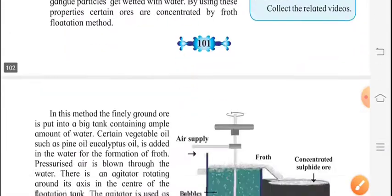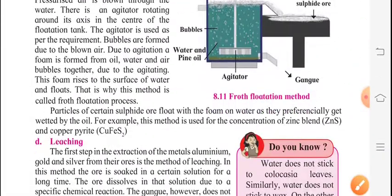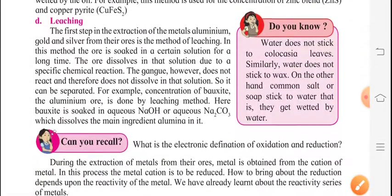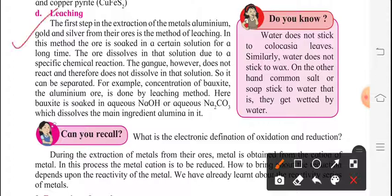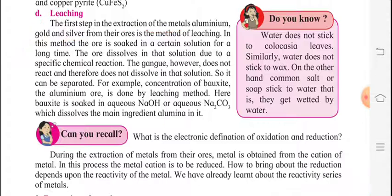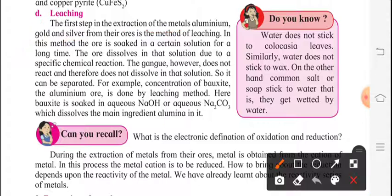Today we are going to discuss about Leaching. This is the first step in the extraction of metals. Aluminium, gold and silver are extracted from their ores by the method of leaching.